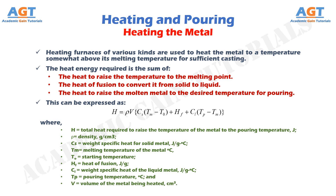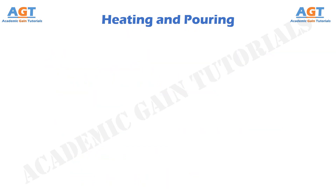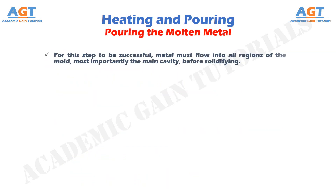Now, when heating is completed, then comes pouring the molten metal. For this step to be successful, metal must flow into all regions of the mold, most importantly the main cavity, before solidifying.